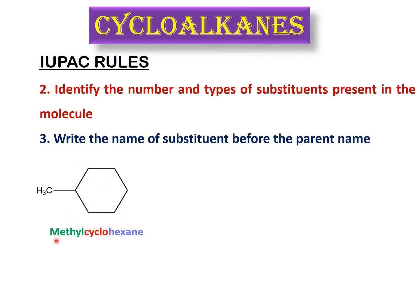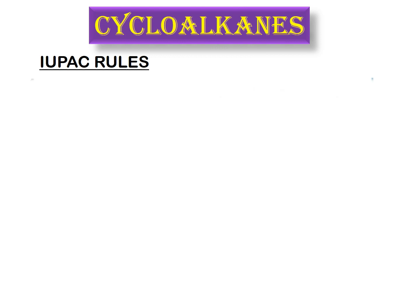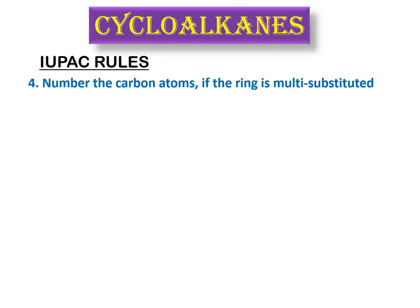For example, a five-membered ring with an ethyl substituent becomes ethyl cyclopentane, and a substituted four-membered ring with a methyl substituent becomes methyl cyclobutane.